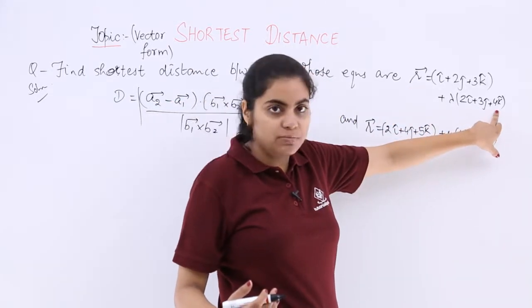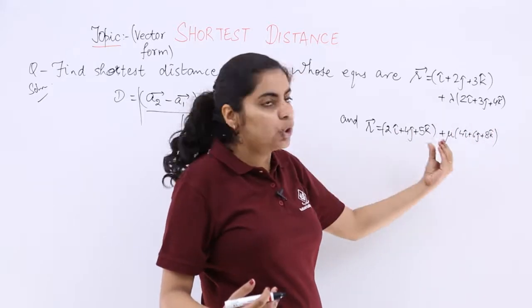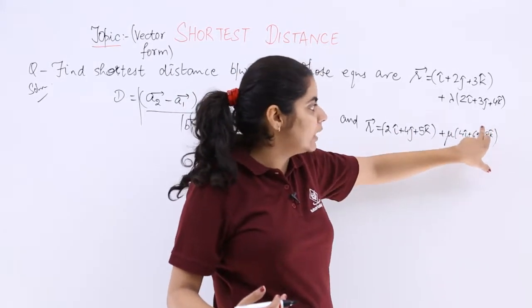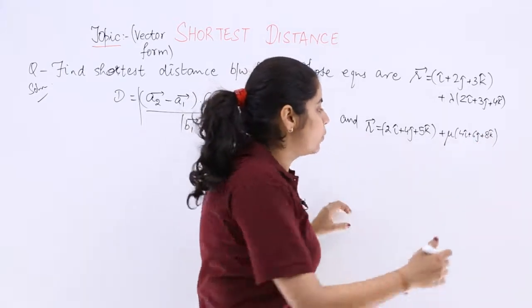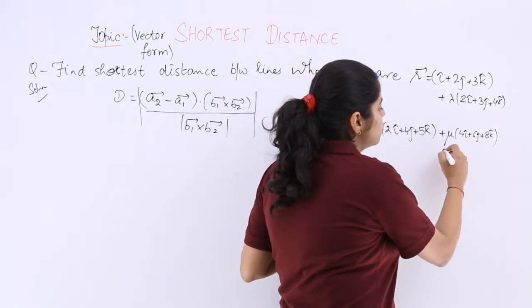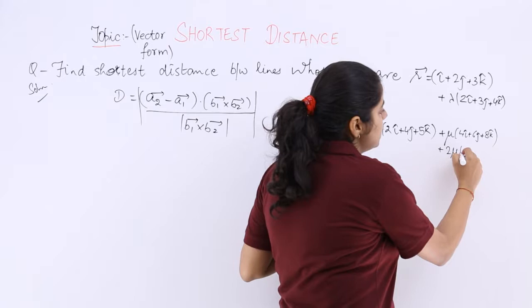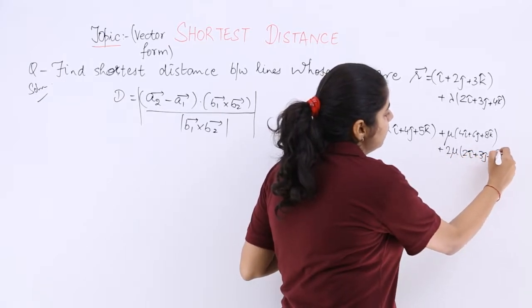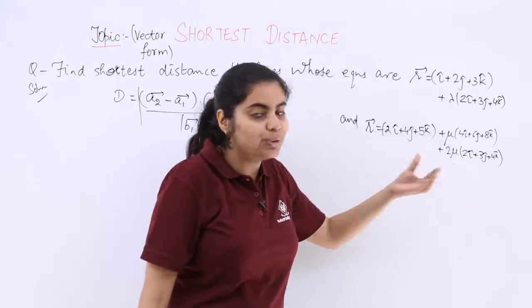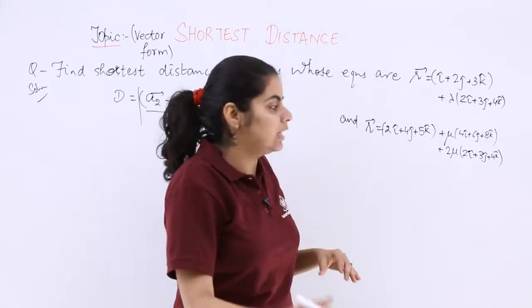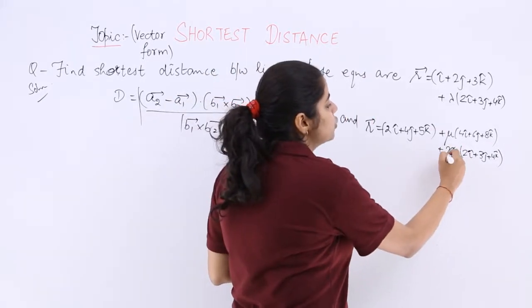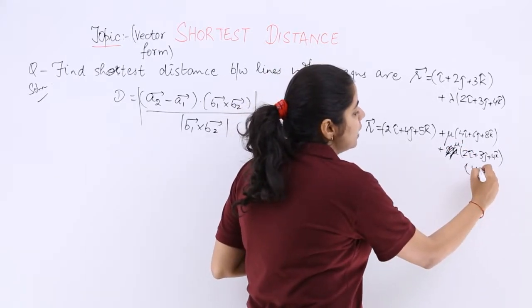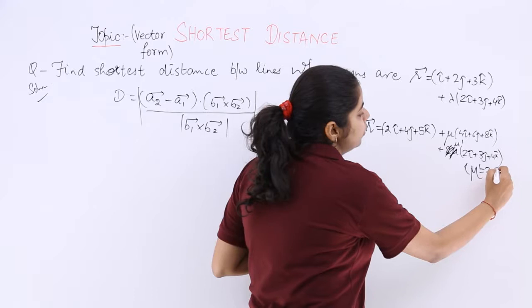This is 2i cap plus 3j cap plus 4k cap. If you take 2 common from here, again this becomes 2i cap plus 3j cap plus 4k cap, which is similar to this. So you're going to take out 2 common. So it becomes plus 2mu (2i cap plus 3j cap plus 4k cap). Now this plus 2mu can be written as some other scalar, probably mu dash. So I replace it and write mu dash, where mu dash is equal to 2mu.